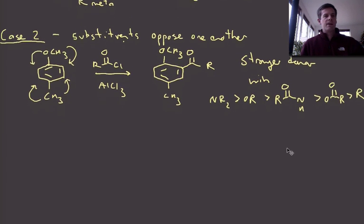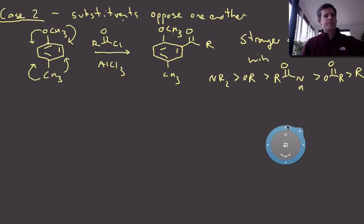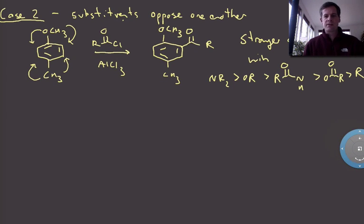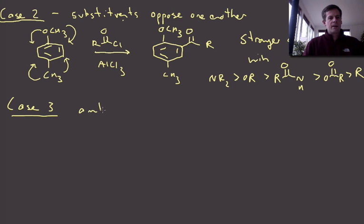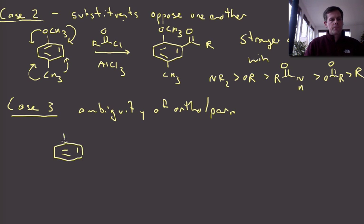And now the final case is the one that's definitely the messiest by far. So case three is going to be another ambiguity of ortho and para positions. Okay, so let's look at a specific example.